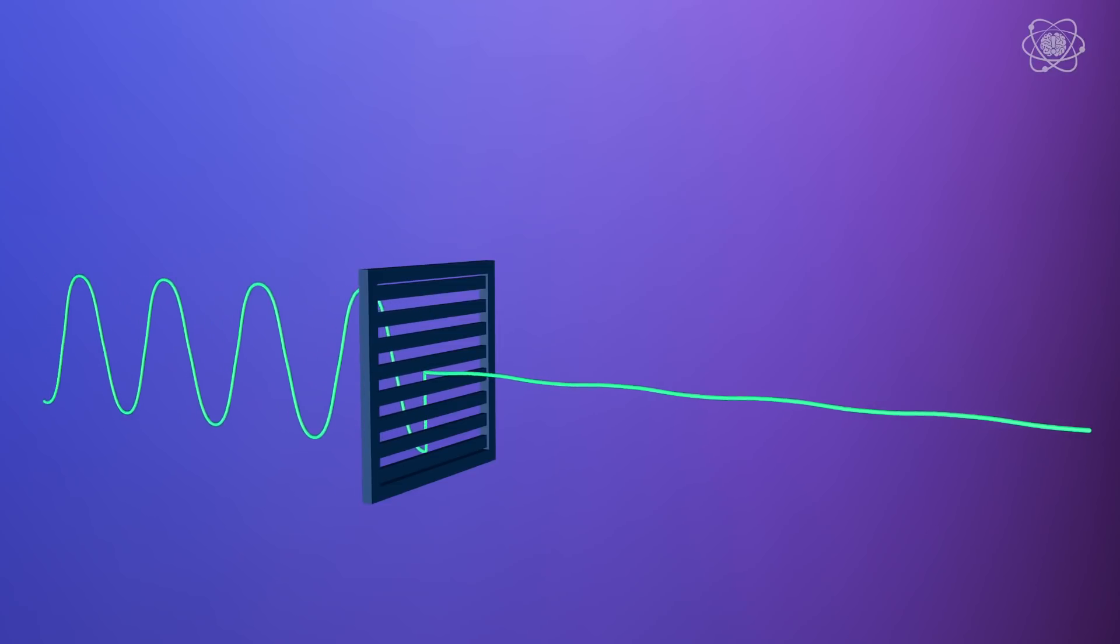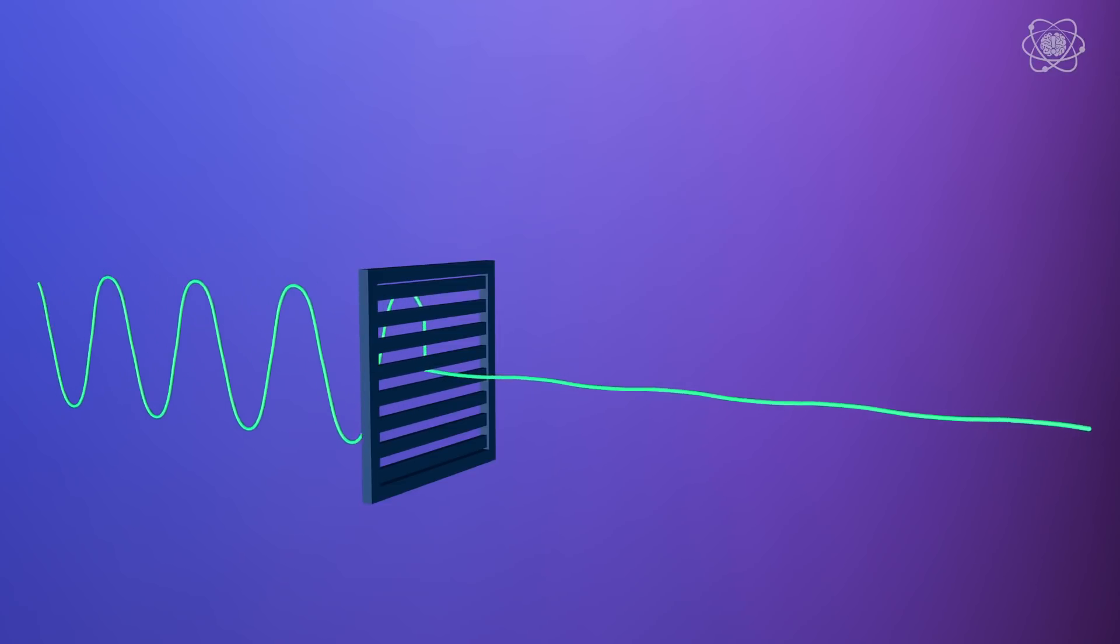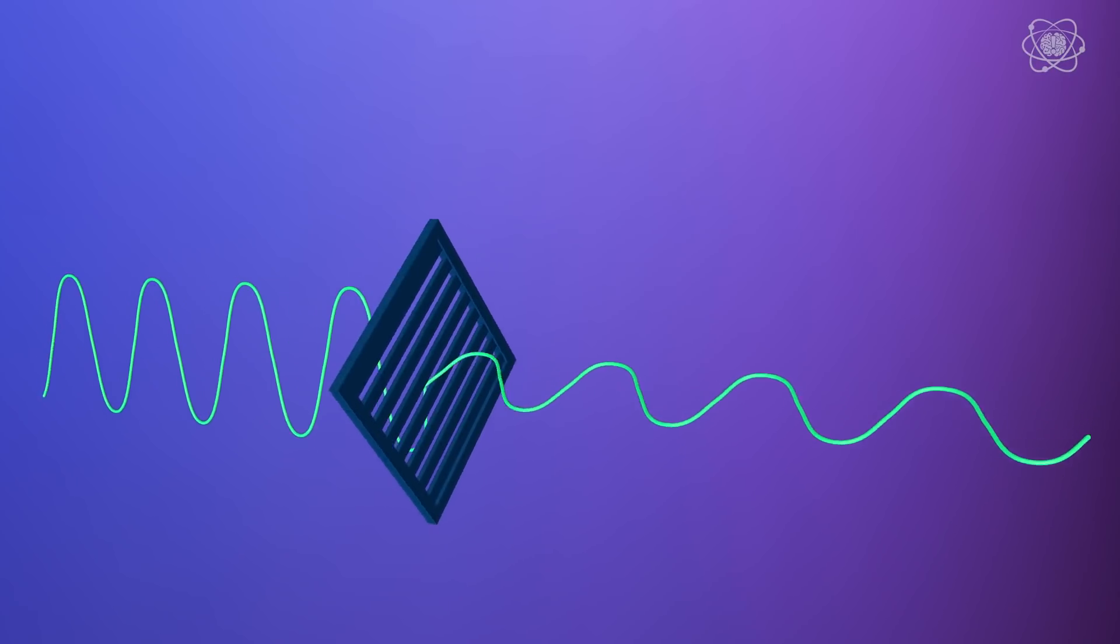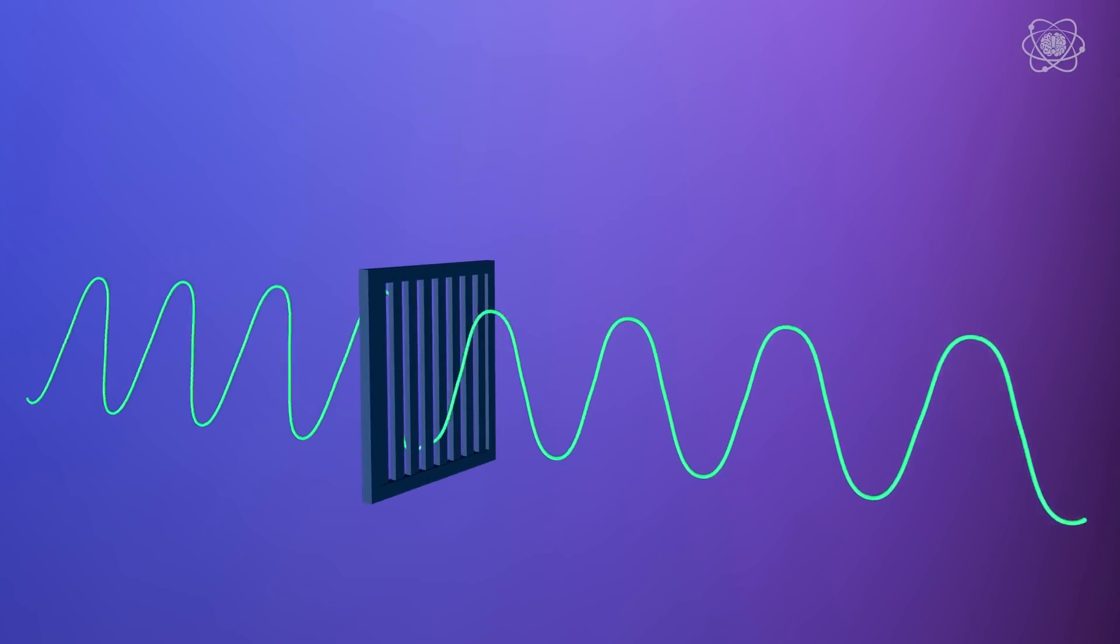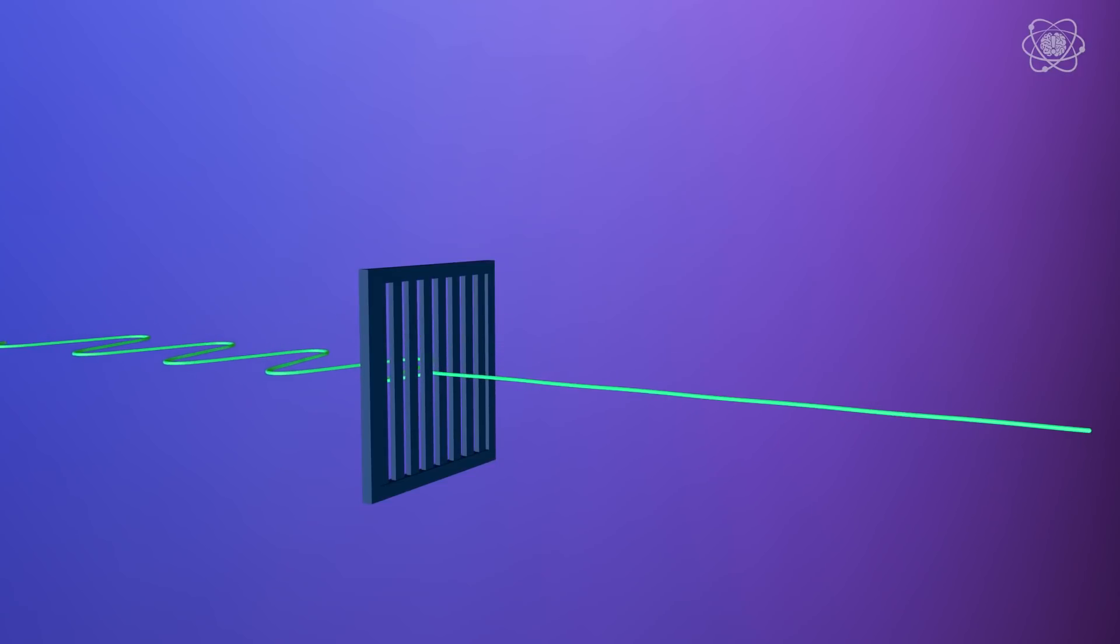The polarizing filter reduces the transverse wave based on the angle the wave passes through it. Which means we can either rotate the filter, or we can keep the filter still and just rotate the wave itself.